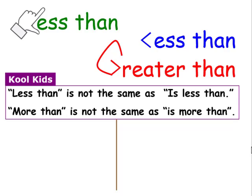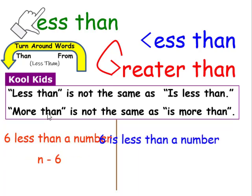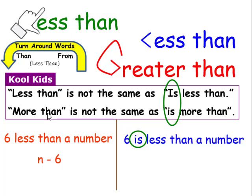The other thing we have to worry about is 'less than.' Earlier we learned that less than or more than, when we're using the word 'then,' those are turn-around words, and we would write '6 less than a number' as n minus 6 — turn it around. But now since we have the word 'is,' as in 'is less than' and 'is more than,' it's not the same. When we see the word 'is' or its substitutes, we're going to use an inequality symbol, and this is going to be 6 is less than n.